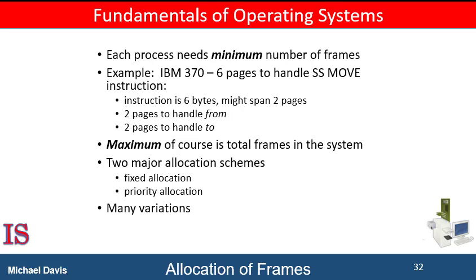Here's another example. The move instruction for Intel 32 and 64-bit architectures allows data to move only from register to register and between registers and memory. It does not allow direct memory-to-memory movement, which limits the required minimum number of frames for a process. Whereas the minimum number of frames per process is defined by the architecture, the maximum number is defined by the amount of physical memory available. In between, we're still left with a significant choice of frame allocation.